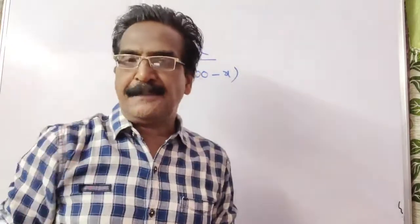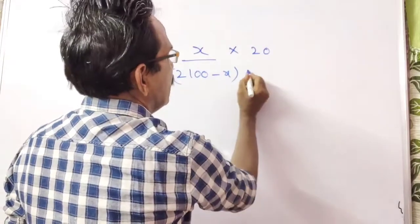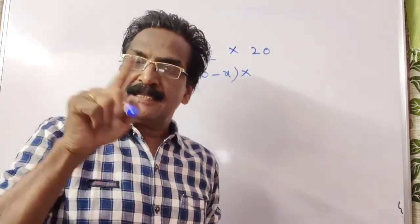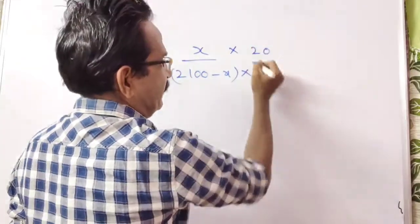Now A spends 80%, so A saves 20%. B spends 70%, B saves 30%. So these are the savings.